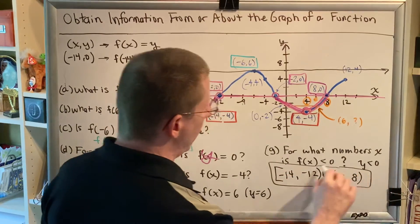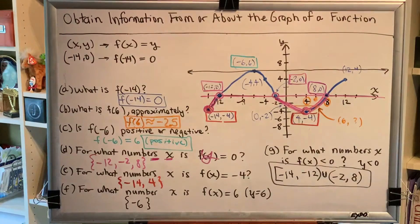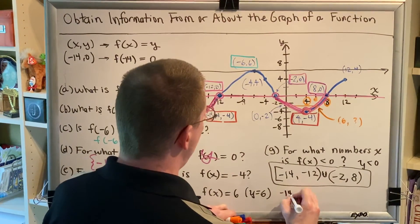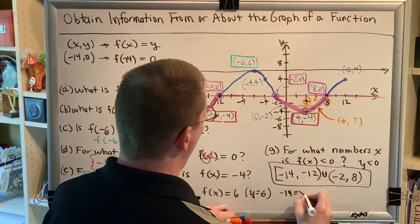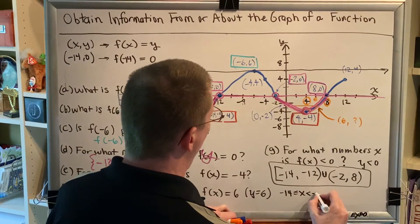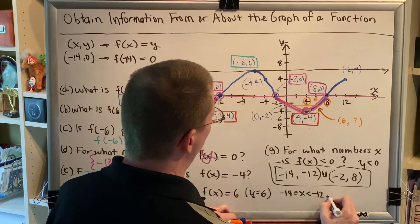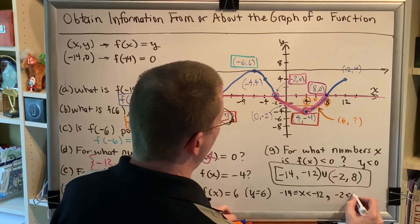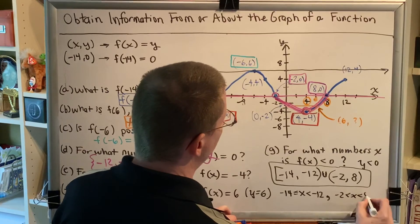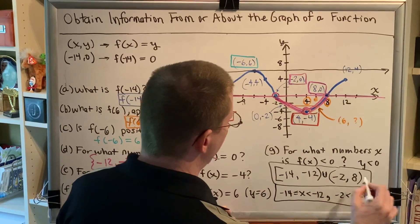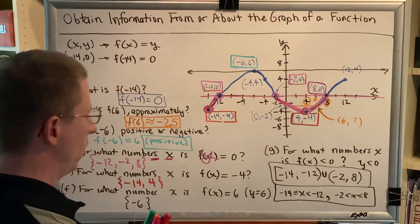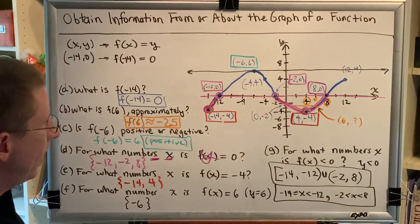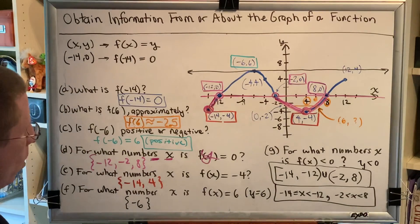We've written it here in interval notation: [-14, -12) ∪ (-2, 8). If you wanted an inequality instead, you would say negative 14 is less than or equal to x is less than negative 12, then a comma, followed by negative 2 is less than x is less than 8. And this would be our answer as an inequality. So the top one is an interval and the bottom one is an inequality. And that is the end of this topic.